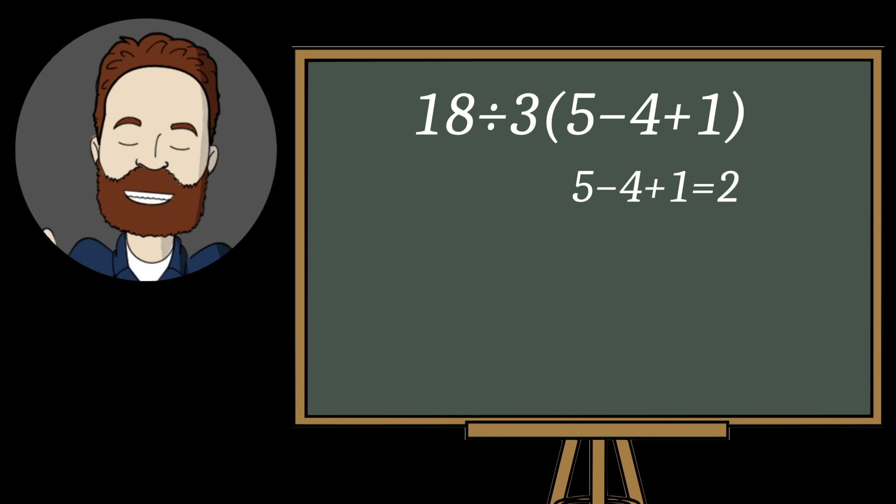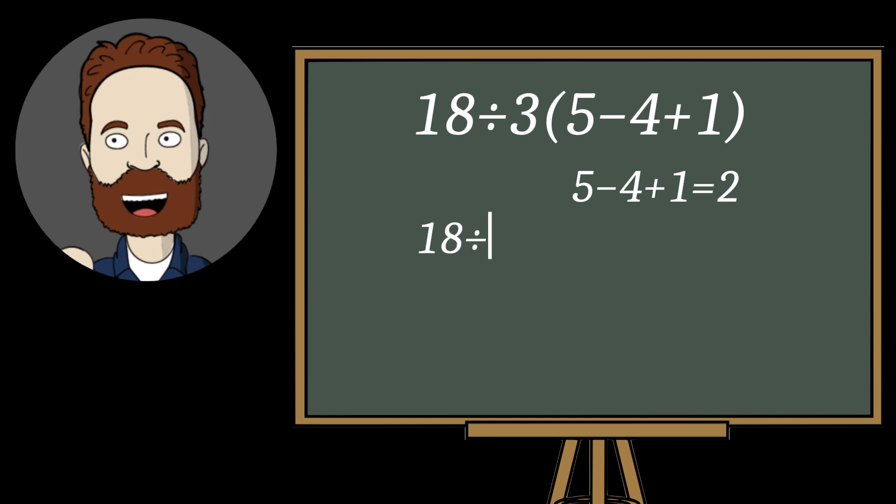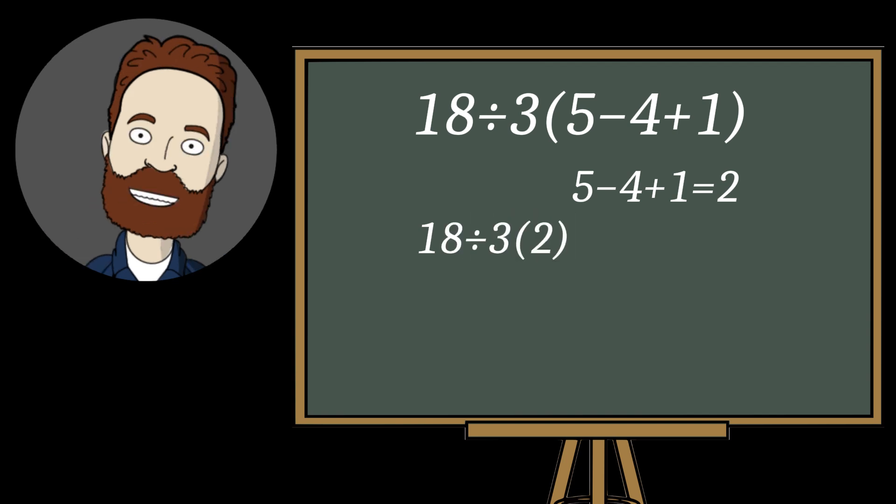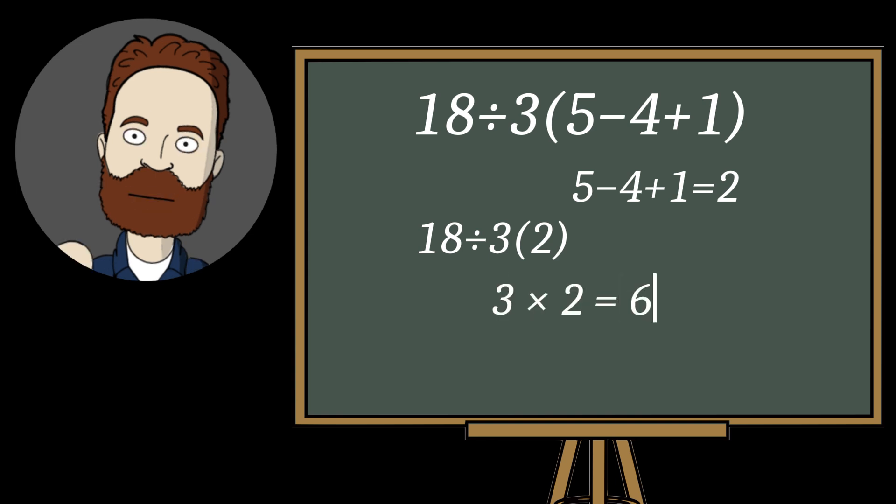Now our expression looks like this. The multiplication sign is often omitted between a number and parentheses, 2 times 2 equals 6.